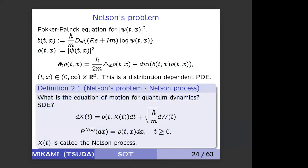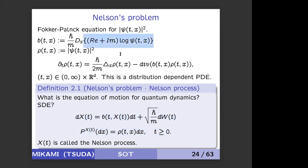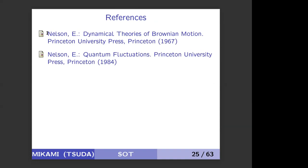If you set V by this formula, then this density satisfies this Fokker-Planck equation, even when Schrödinger's equation is nonlinear. So Nelson's program is: what is the equation of motion for quantum dynamics by SDE? Since you have a Fokker-Planck equation you have this program, and if this SDE has a solution it is called the Nelson process. I emphasize that the drift b is a gradient of a scalar function.